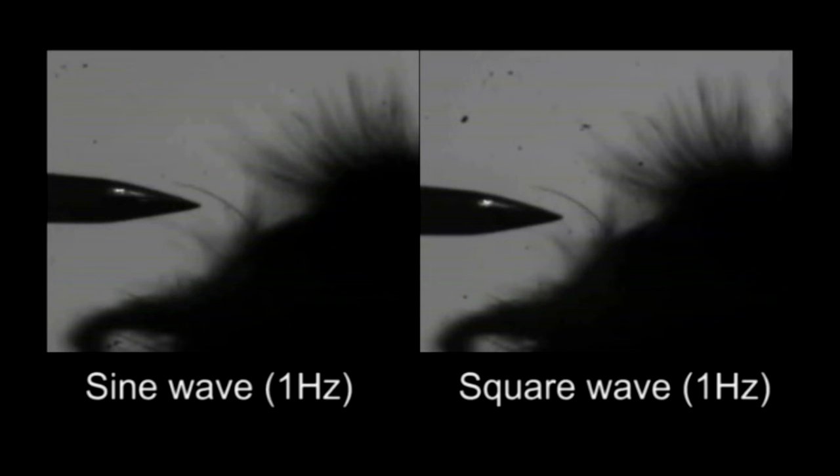Electroreception in air, a non-conductive medium, is a recently discovered sensory capacity of insects, yet the sensory mechanisms remain elusive.